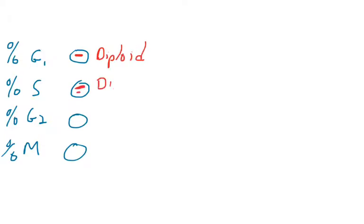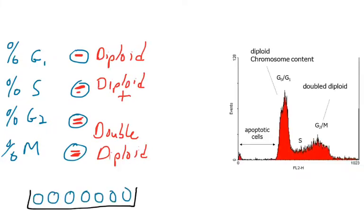So how do we determine, out of all the cells we have in our dishes, what percentage of them are in G1, S, G2, and M? This is what the data output is going to look like in this experiment.